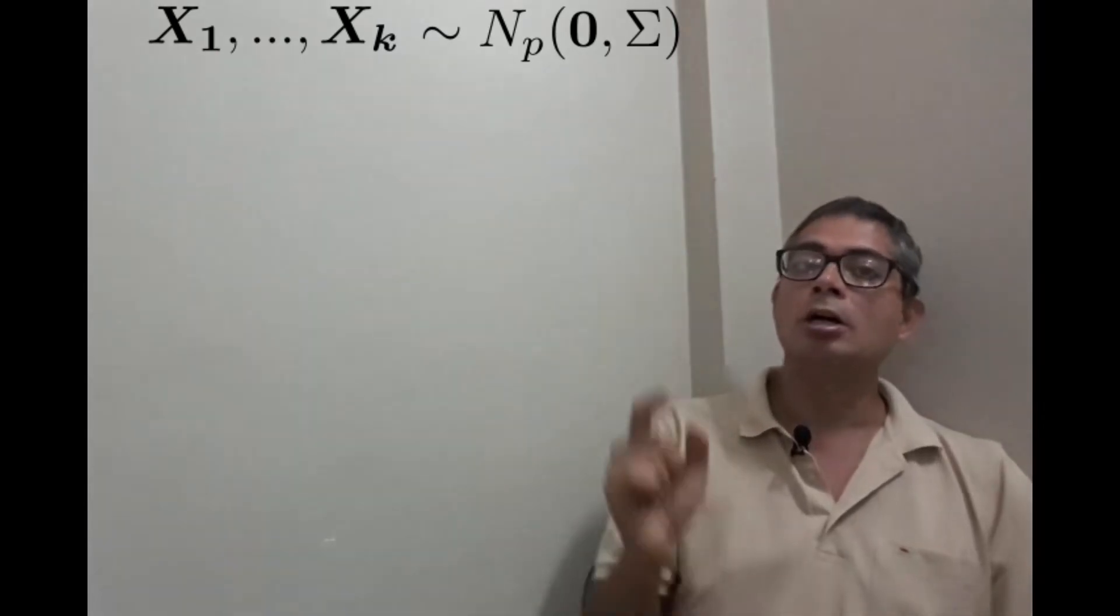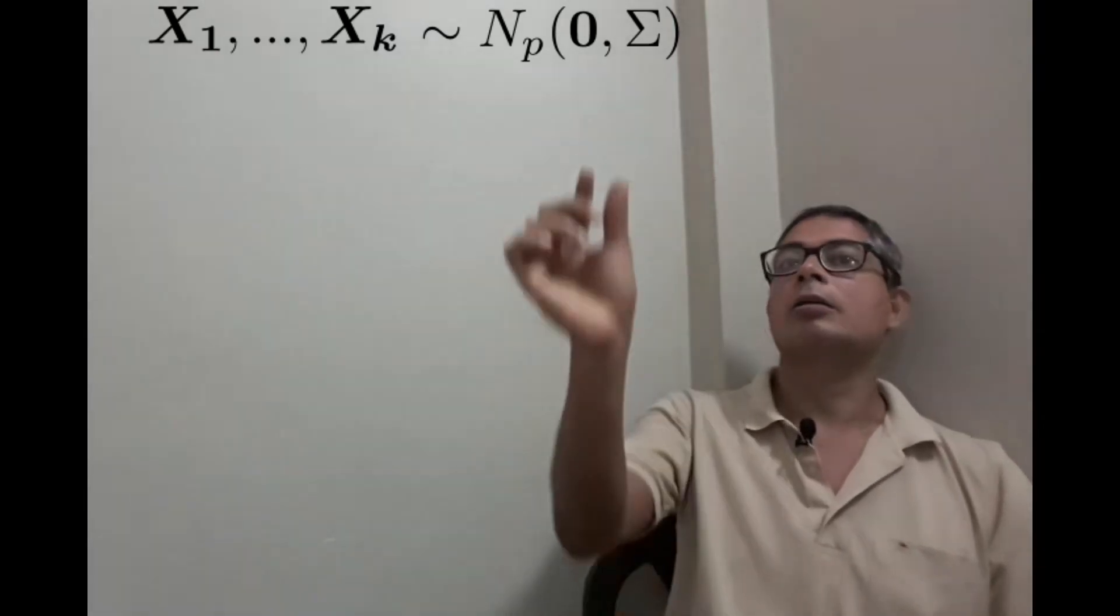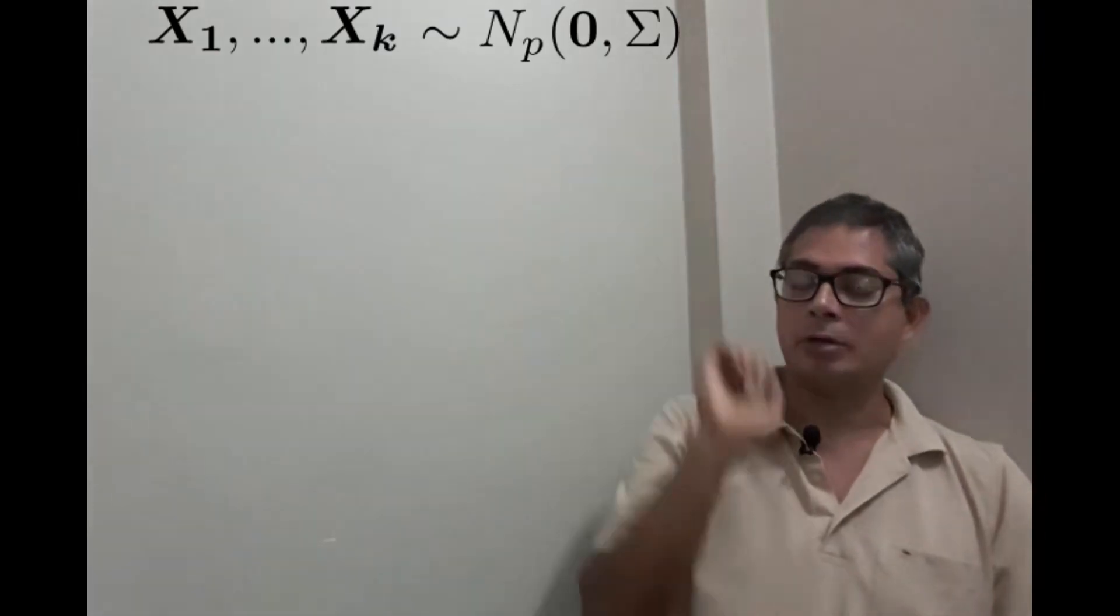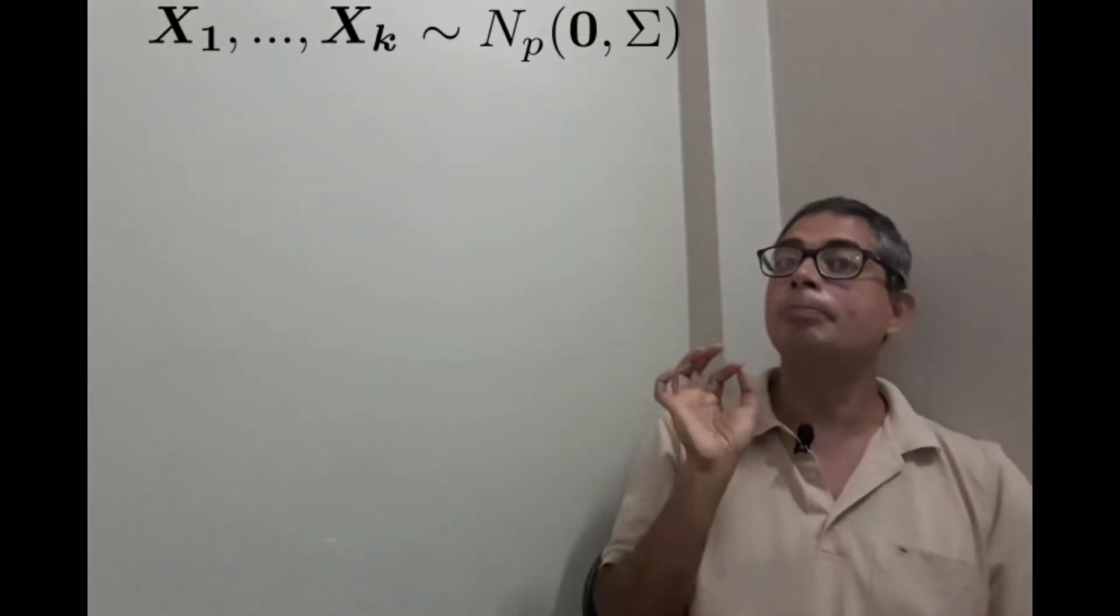Mean zero, but now we are allowing a covariance matrix Σ, which we want to be positive definite, not just non-negative definite.